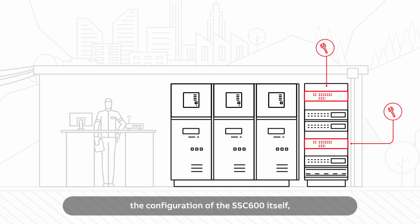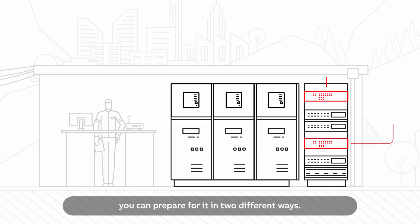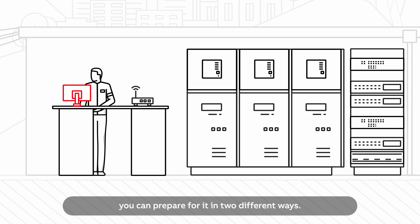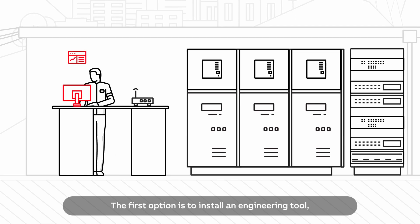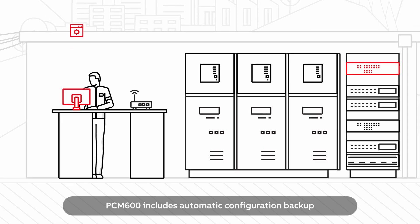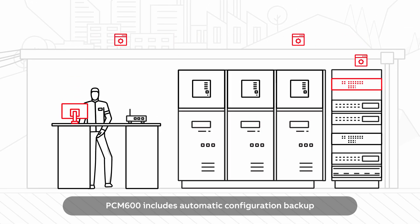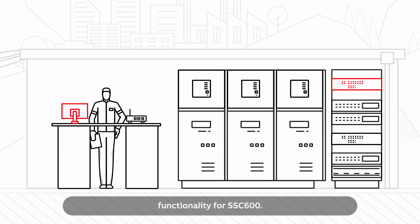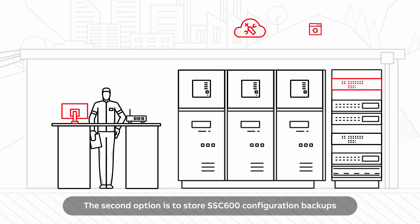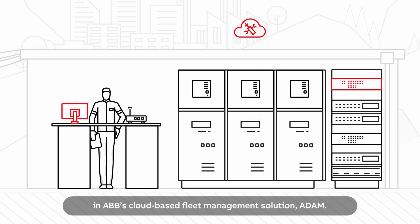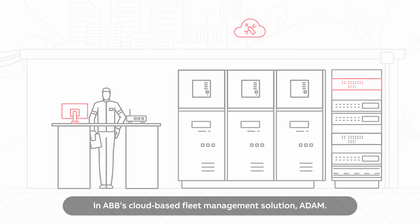In case there is a need to restore the configuration of the SSC600 itself, you can prepare for it in two different ways. The first option is to install an engineering tool such as ABB's PCM600 on the substation computer. PCM600 includes automatic configuration backup functionality for SSC600. The second option is to store SSC600 configuration backups in ABB's cloud-based fleet management solution, Atom.